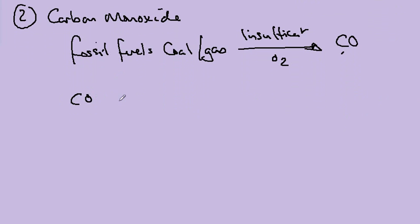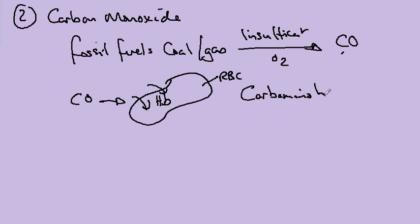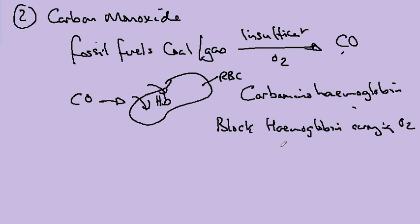And what carbon monoxide does is it combines with hemoglobin inside red cells. This is a red blood cell. And forms a molecule called carbaminohemoglobin. And the problem with this is that it blocks hemoglobin from carrying oxygen. So we're reducing the oxygen circulation.